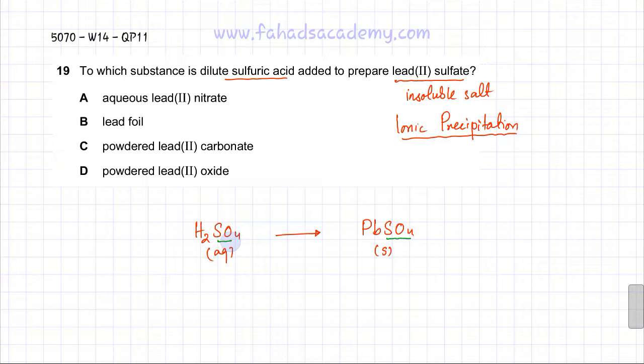The sulfate ion is obtained from H2SO4, and we need another soluble substance to give us the lead ion. The only correct option to get lead ions is aqueous lead nitrate, which will provide the lead ion.